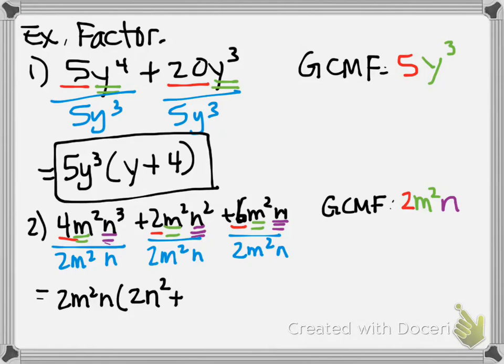Then it says plus. Next, 2 divided by 2 is 1. m squared divided by m squared is 1. n squared divided by n is 1. We finally have something left over. We have an n. 1s aren't that interesting. All right. 6 divided by 2 is 3. m squared divided by m squared is 1. n divided by n is 1. And that's it.